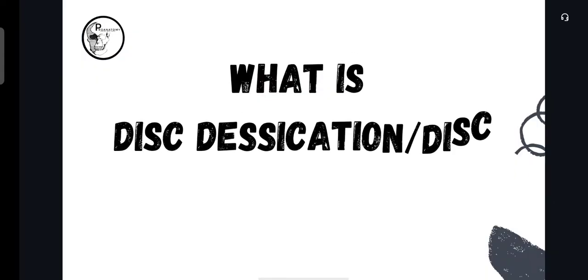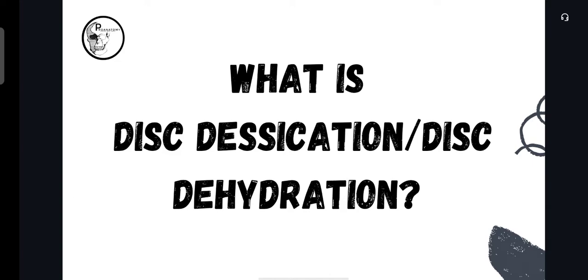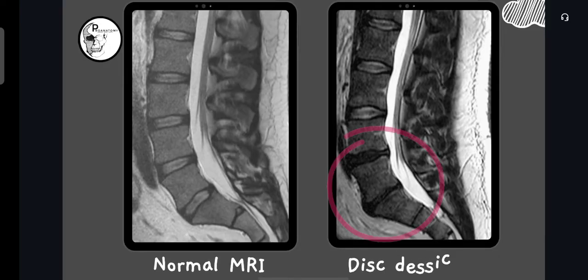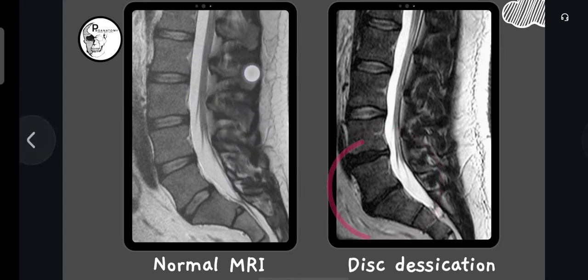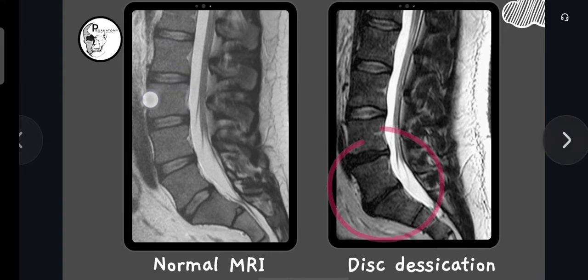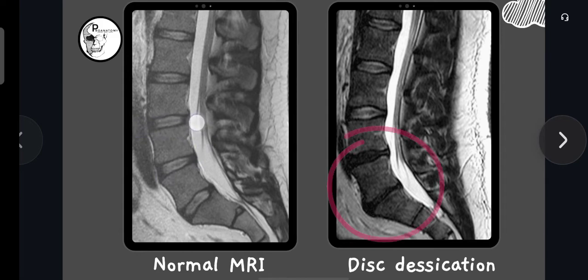Now let's discuss disc desiccation or disc dehydration with the help of an MRI. Here we have two MRI scan reports where you can actually assess the actual degeneration happening in the discs. We should know the normal MRI first. Here in the left one, we can see the normal MRI where you can clearly demarcate the vertebral bodies. And between the vertebral bodies, you can see lighter colored intervertebral discs.